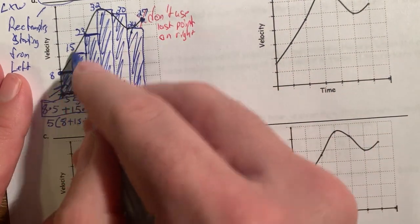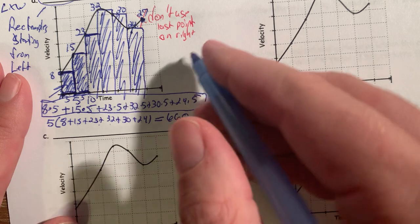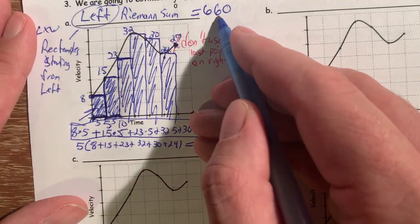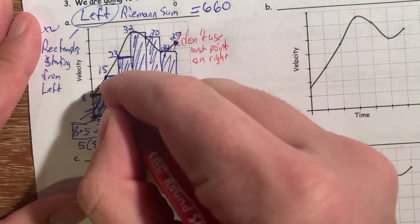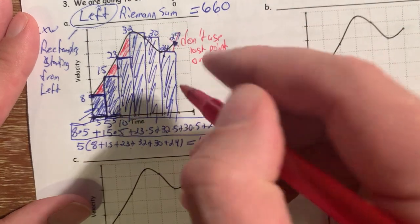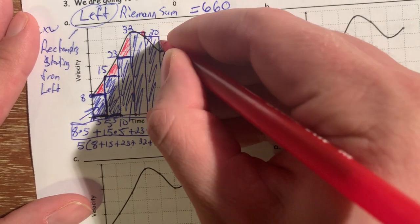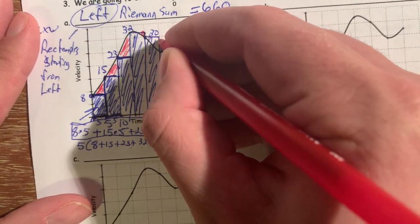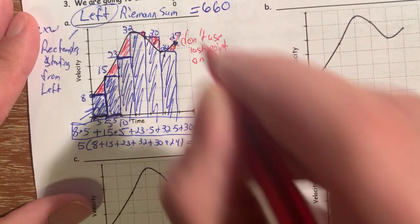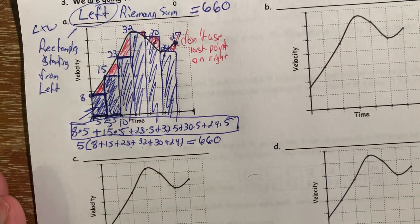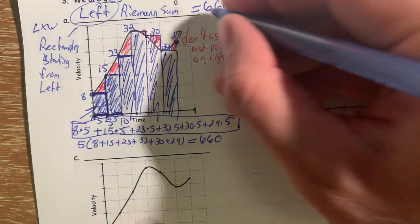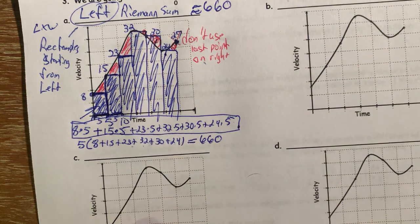Is this the exact area? Is this how far the car traveled? No — we can see there are some parts missing, some areas where we're overcounting and some where we're missing area. This isn't exactly right, but it's an estimate. The car traveled about 660 feet.